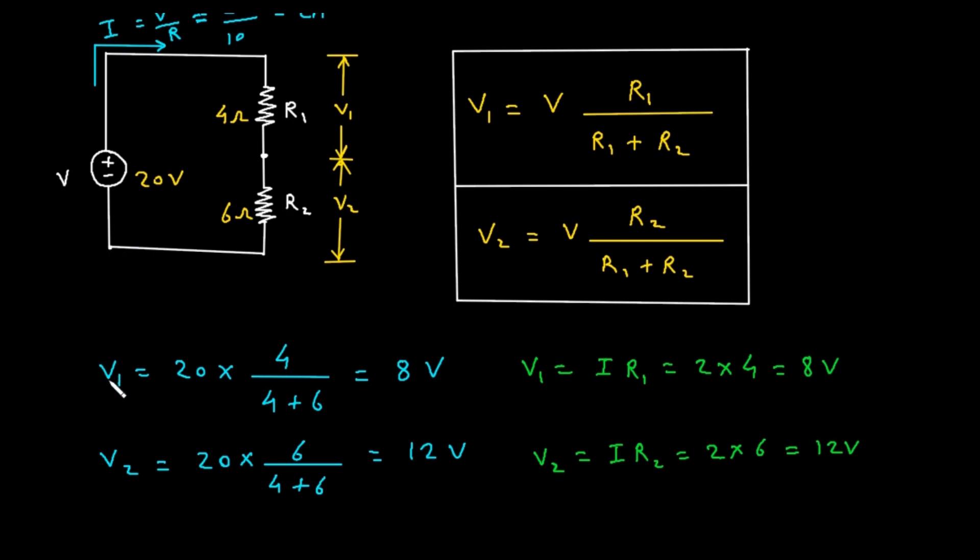First of all, let's find the value of V1. So V1 is equal to supplied voltage, which is 20, so here it is 20 into self-resistance value, which is 4 ohm divided by total resistance, which is 4 plus 6. Now if we solve this, we get 8 volt.